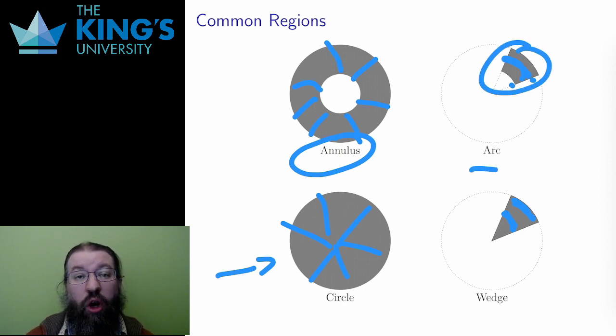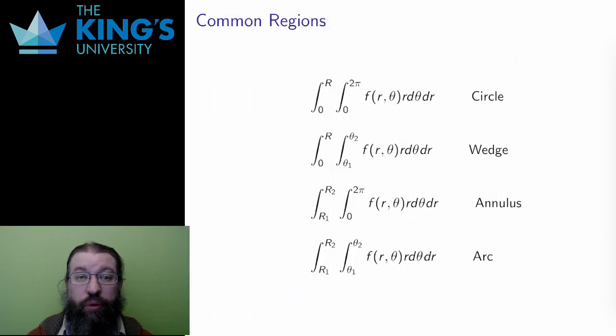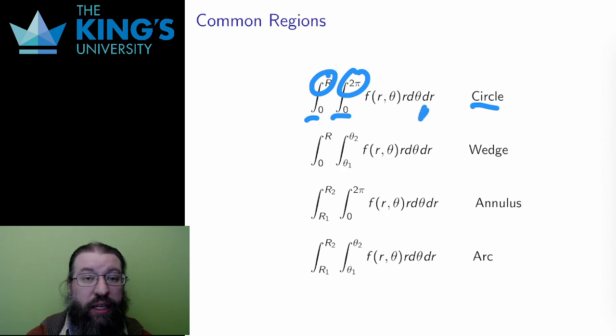The previous four regions all had constant bounds in polar coordinates. Let me show you what this looks like in integral setups. First, to integrate over a circle, I let the radius go from 0 to some fixed radius capital R, and the angle go all the way around from 0 to 2 pi. Notice that the dr is outside to match with the radius bounds outside, and the d theta is inside to match with the angle bounds inside. The function f of r theta is some function in polar coordinates, and I have the Jacobian term R where it should be in the integral. This is how I set up an integral over a circle in polar coordinates.